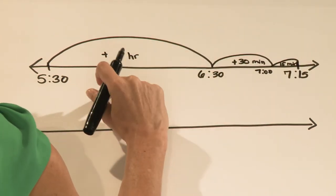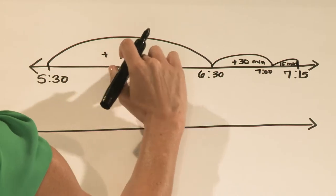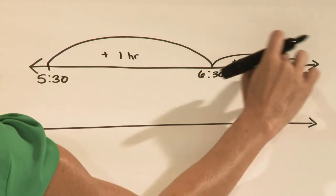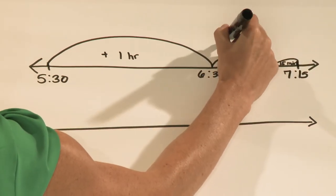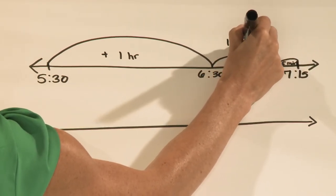I can then add all three times up to come up with my elapsed time. One hour, one hour and 30 minutes, one hour and 45 minutes. So Sanjay's practice was one hour and 45 minutes.